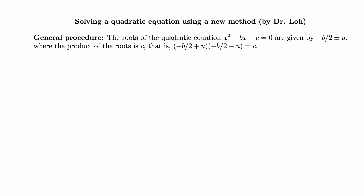Solving a quadratic equation using a new method by Dr. Lowe of Carnegie Mellon University. A general procedure: the roots of the quadratic equation x squared plus bx plus c equals 0. If there is a non-zero leading coefficient, we can divide through by that. The roots are given by negative b over 2 plus or minus u, where the product of the roots is the constant c — that is, negative b over 2 plus u times negative b over 2 minus u equals c. Then all we have to find is u from this product.